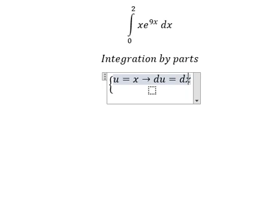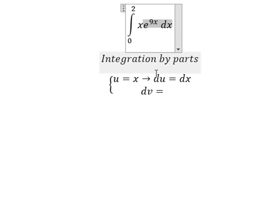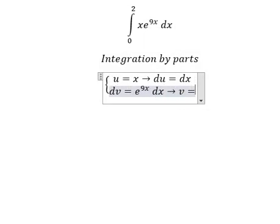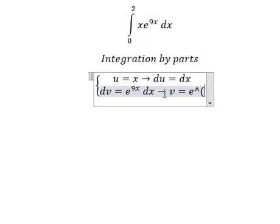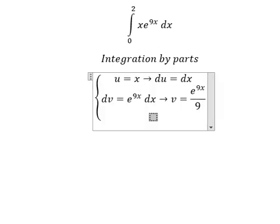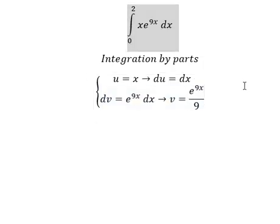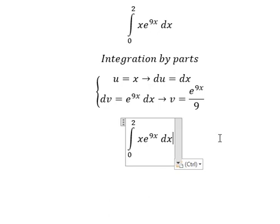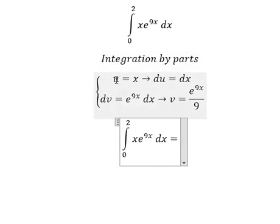We differentiate both sides and we get dv. The integration of e to the power of 9x gives us e to the power of 9x over 9, so this one is v.